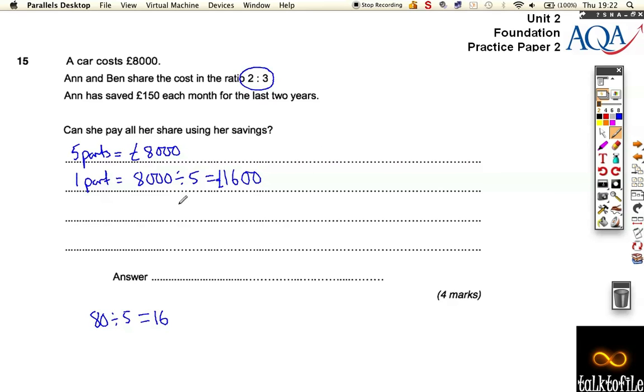So, if Anne and Ben are supposed to be sharing this, Anne's paying two, which comes out as £3,200, so she's supposed to be putting in £3,200. And Ben is doing three of them, which comes out, you don't really need to know this, but Ben comes out having to pay £4,800. That's the way they've decided to split it, two to three.